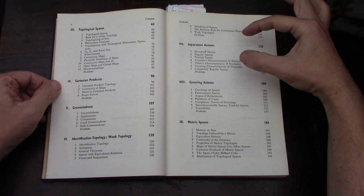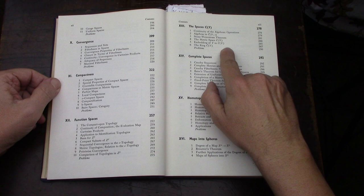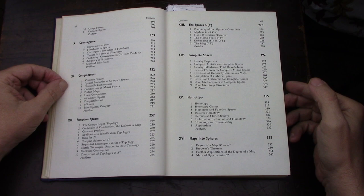It's got weak topology, the separation axioms, metric spaces. It's got a lot of vector spaces of functions, which Conway talks about a lot.